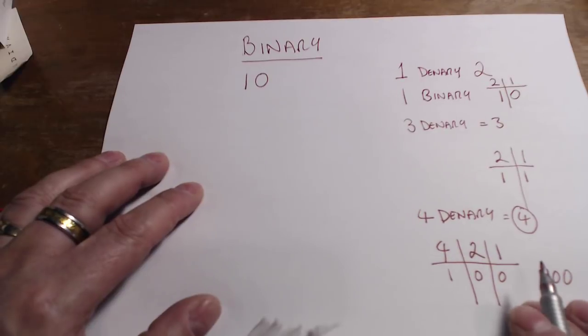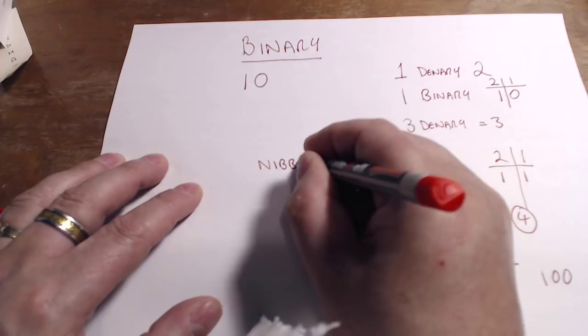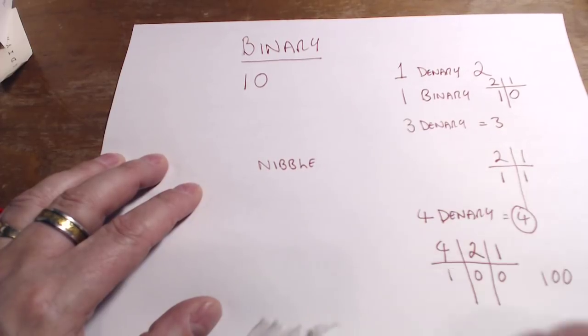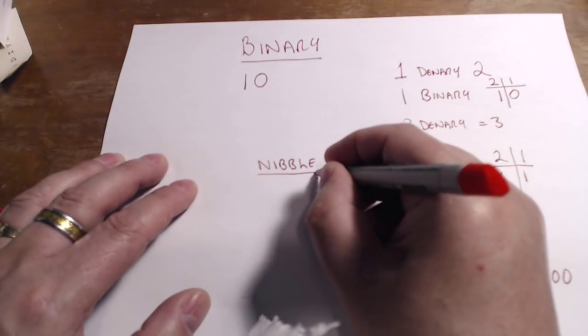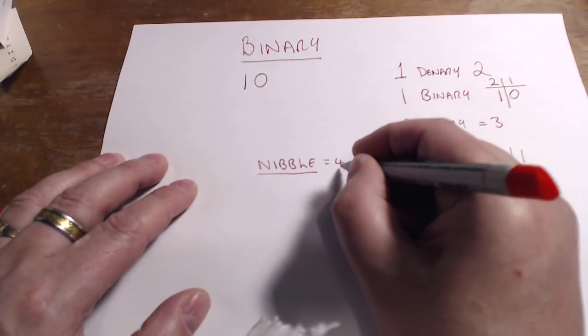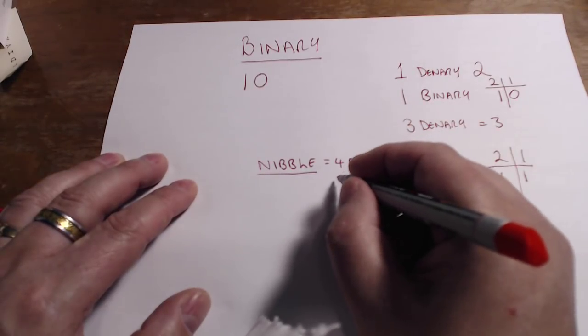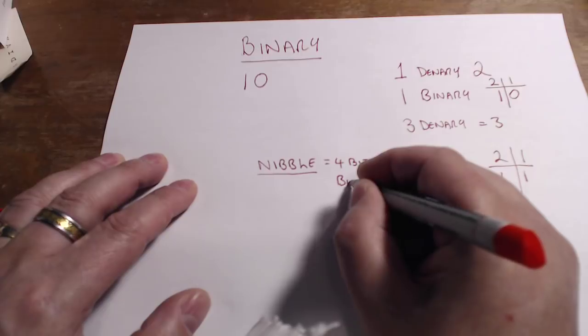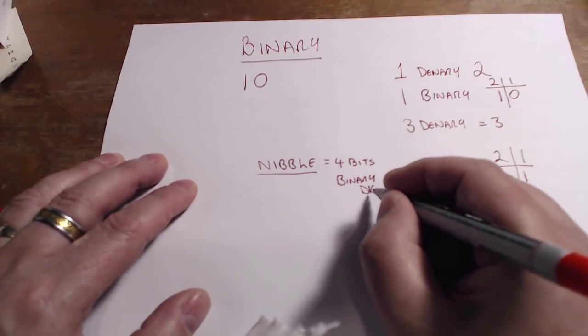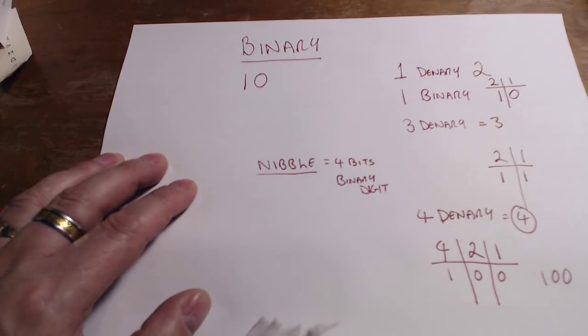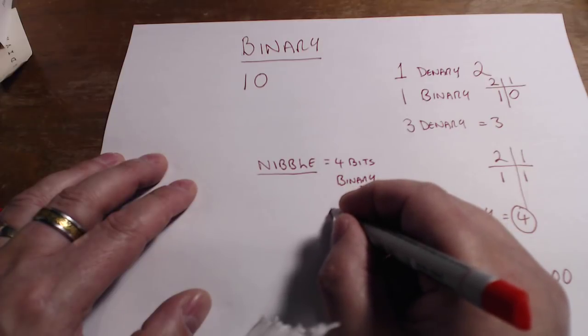Okay, so let's work on what is called a nibble. I promise you I have not made that word up. It's actually a size in binary. A nibble is four bits. A bit is just short for binary digit.